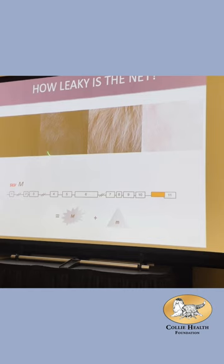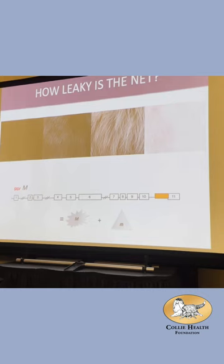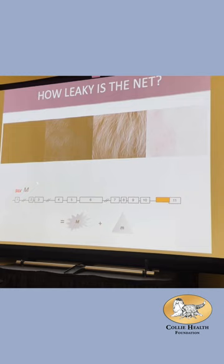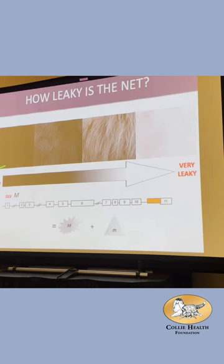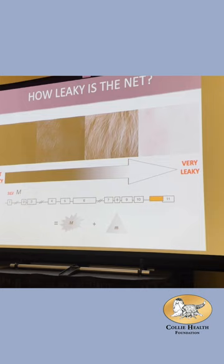It all comes down to how leaky your net is — it's a spectrum. From fully pigmented fur all the way to the dilute fur of the blue dog, from standard merle up to harlequin where there's almost no melanin. It all depends on the merle allele: how much good protein and how much bad protein are you producing? If the net is solid, you're all black. If the net is poor, you are white. And there's everything in between.